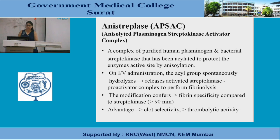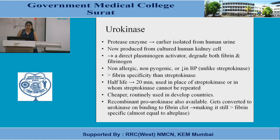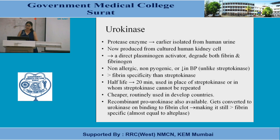Urokinase is a protease enzyme originally isolated from human urine, now produced from cultured human kidney cells. It is a direct plasminogen activator that degrades both fibrin and fibrinogen. Advantages over streptokinase: it is non-allergic, non-pyrogenic, does not cause hypotension, has greater fibrin specificity, and has a short half-life of 20 minutes. It can be used in place of streptokinase or when streptokinase cannot be repeated. A recombinant pro-urokinase is also available, which converts to urokinase on binding to fibrin clot, making it fibrin-specific with activity almost equal to alteplase.